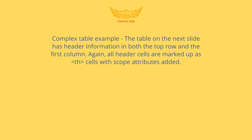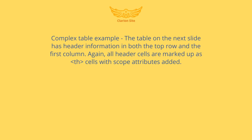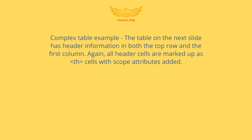Complex table example. The table on the next slide has header information in both the top row and the first column. All header cells are marked up as TH cells with scope attributes added.